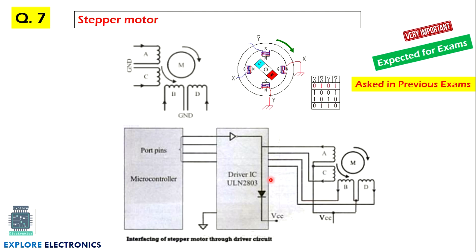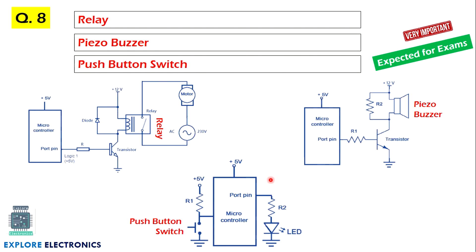And then relay, piezo buzzer, push button switch are the three important concepts again. In the book itself they have given with respect to the microcontroller is concerned. So again here I have given three questions here. These three questions may be asked separately. You may get a question like explain relay with interfacing with the microcontroller for five marks. Similarly piezo buzzer as well as push button switch. You need to write this circuit and also how relay is going to work, how piezo buzzer is going to work, and how push button switch is going to work.